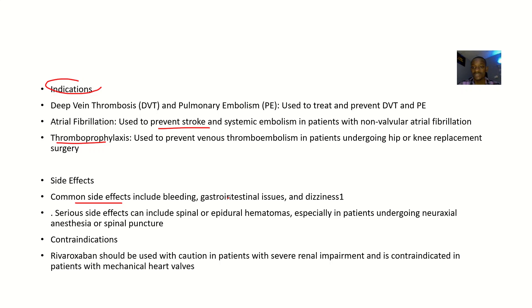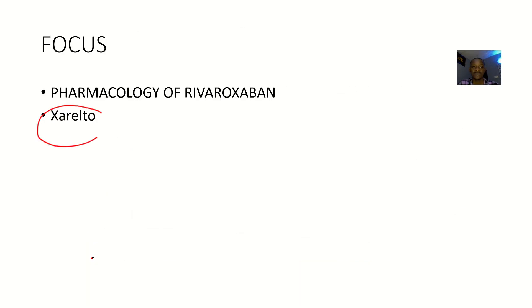Common side effects include bleeding, gastrointestinal issues, and dizziness. Serious side effects can include spinal and epidural hematomas, especially in patients undergoing neuraxial anesthesia or spinal puncture. As for contraindications, rivaroxaban should be used with caution in patients with severe renal impairment, and it is contraindicated in patients with mechanical heart valves.